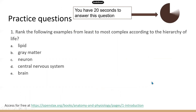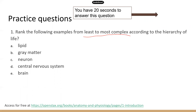Now let's look at a practice question. This question asks you to rank the following examples from least to most complex according to the hierarchy of the body — meaning from the smallest component to the largest component.